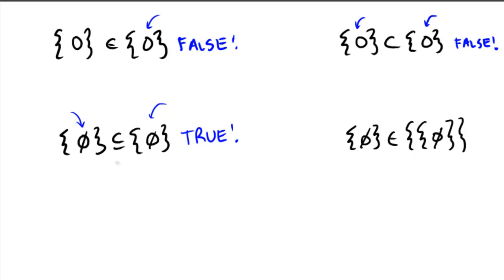Finally, one drawn in distinction in case you got the top left incorrect. Here we have on the left the set containing the null set, and we're asking if it is an element of the set that contains the set containing the empty set. Notice that this object is inside of the set on the right, so this one's actually a true statement. That helps you see why the top left was wrong in case you were confused about that.